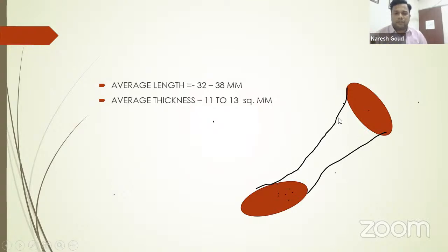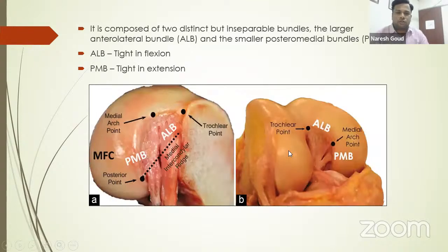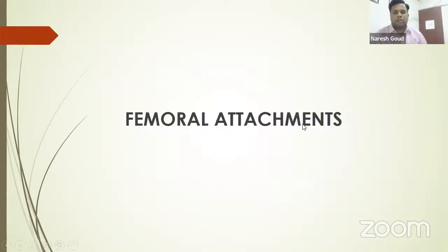The PCL footprints are fanned out and are around 300 to 500 percent bigger compared to the mid-substance. It is composed of two distinct inseparable bundles: the anterolateral bundle and the posteromedial bundle. The anterolateral bundle is tight in flexion, whereas the posteromedial bundle is tight in extension.